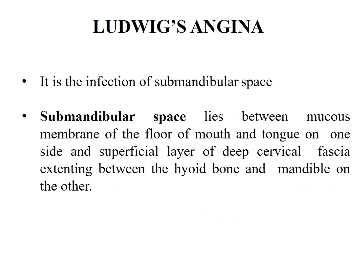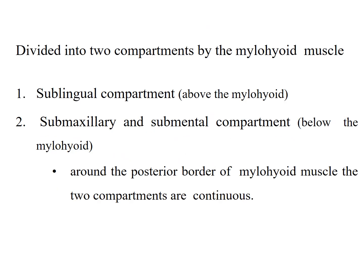The second important topic is Ludwig's Angina. It is the infection of the submandibular space. The applied anatomy of the submandibular space is that it lies between the mucous membrane of the floor of the mouth and tongue on one side, and the superficial layer of the deep cervical fascia extending between the hyoid bone and mandible on the other side. It is divided into two compartments by the mylohyoid muscle.